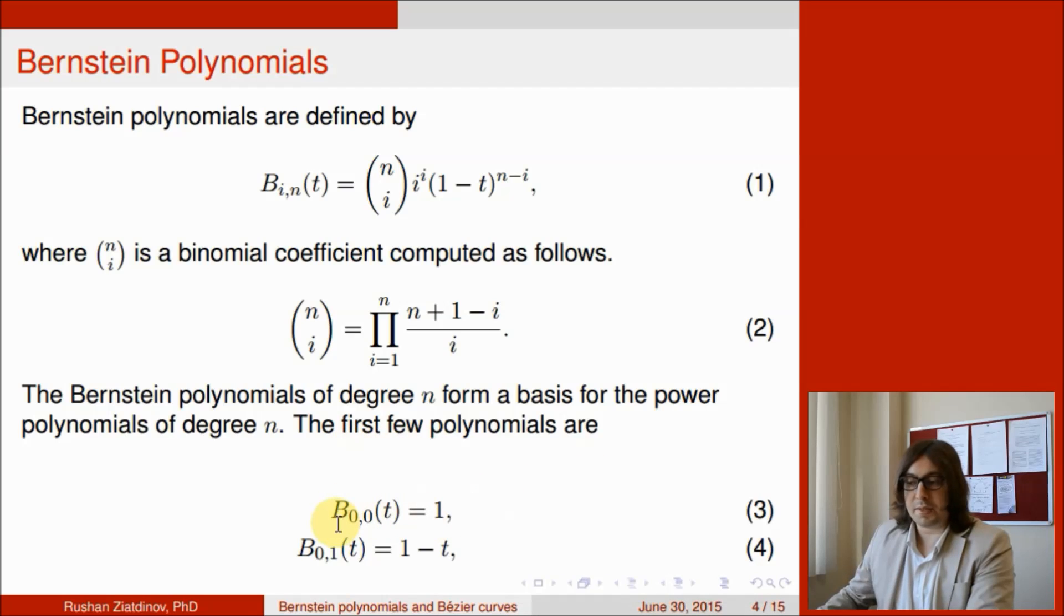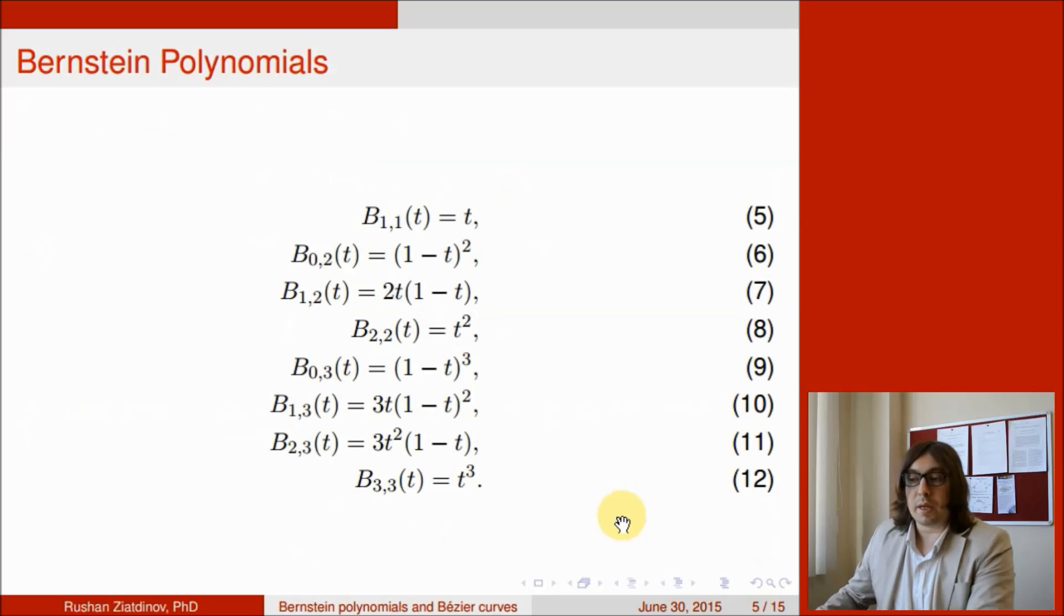For instance, b_0,0 of t equals 1, so this is a constant, and b_0,1 of t equals 1 minus t, which is linear. The next polynomials are shown on this slide. For instance, b_1,1 of t is equal to t and b_3,3 of t equals t cubed as shown in Formula 12.